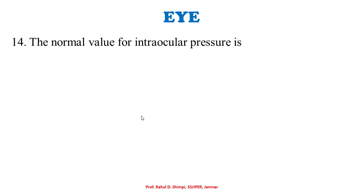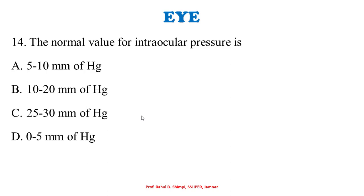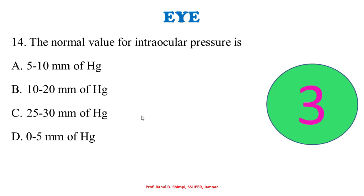The normal value for intraocular pressure is: A: 5 to 10 mmHg. B: 10 to 20 mmHg. C: 25 to 30 mmHg. D: 0 to 5 mmHg. The correct option is 10 to 20 mmHg. This intraocular pressure is built due to the secretion and discharge of aqueous fluid into the anterior segment of the eye.